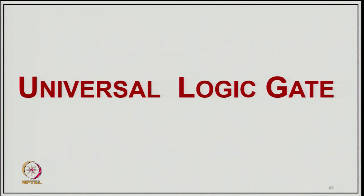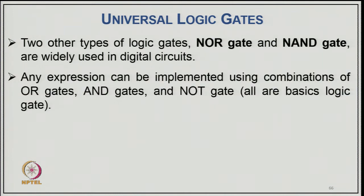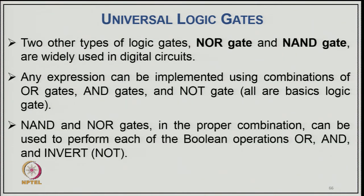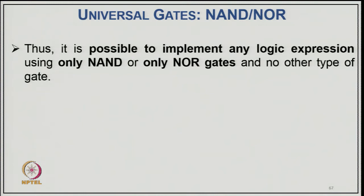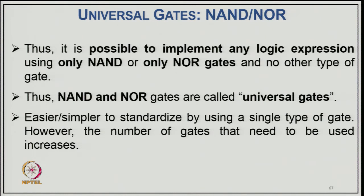Universal logic gates: NAND and NOR gates are widely used in digital circuits. Any expression can be implemented using combinations of OR, AND, and NOT gates. NAND and NOR gates in proper combination can perform each Boolean operation — OR, AND, and NOT. Thus it is possible to implement any logic expression using only NAND or NOR gates alone, which is why they are called universal logic gates. The number of gates needed may increase, but the design is simplified.